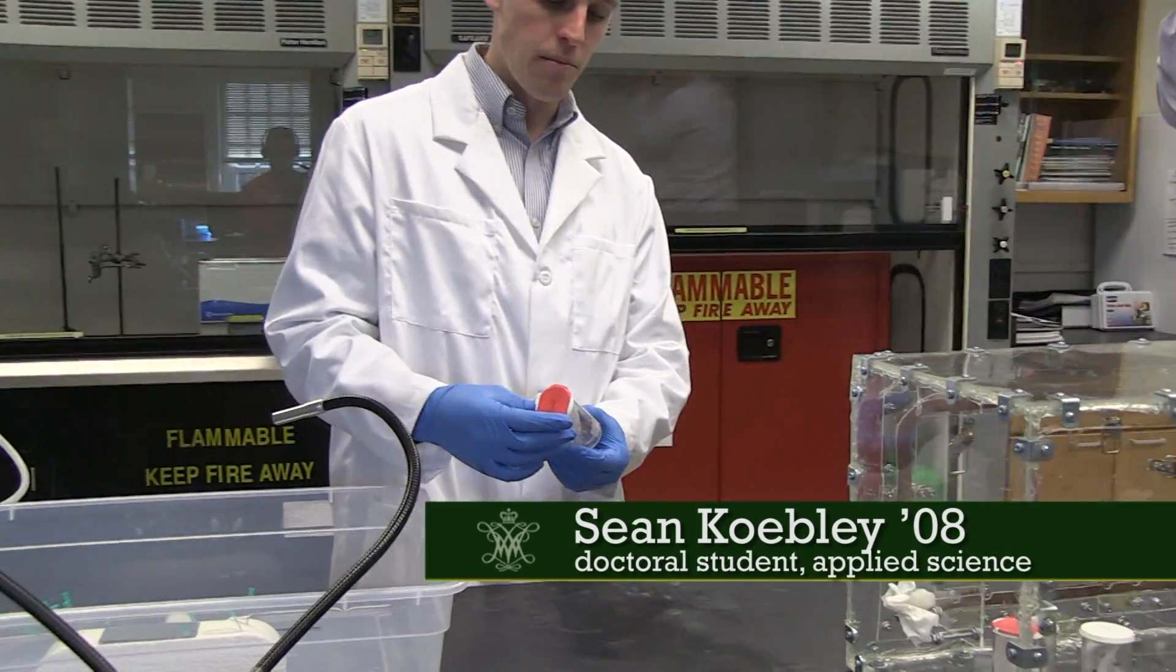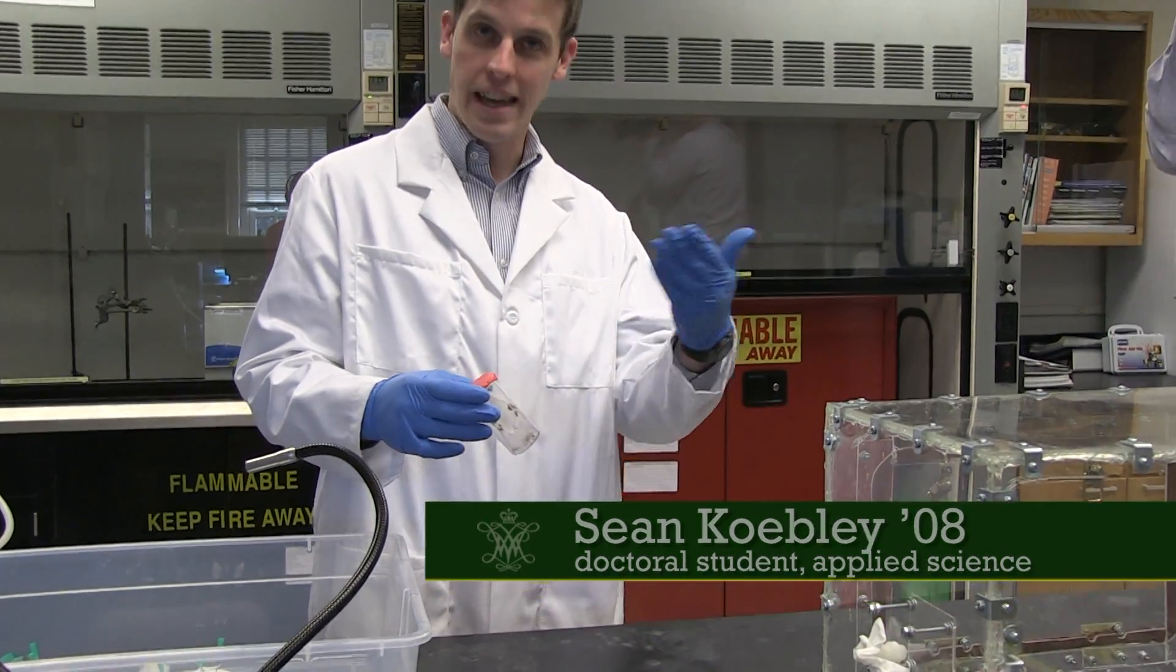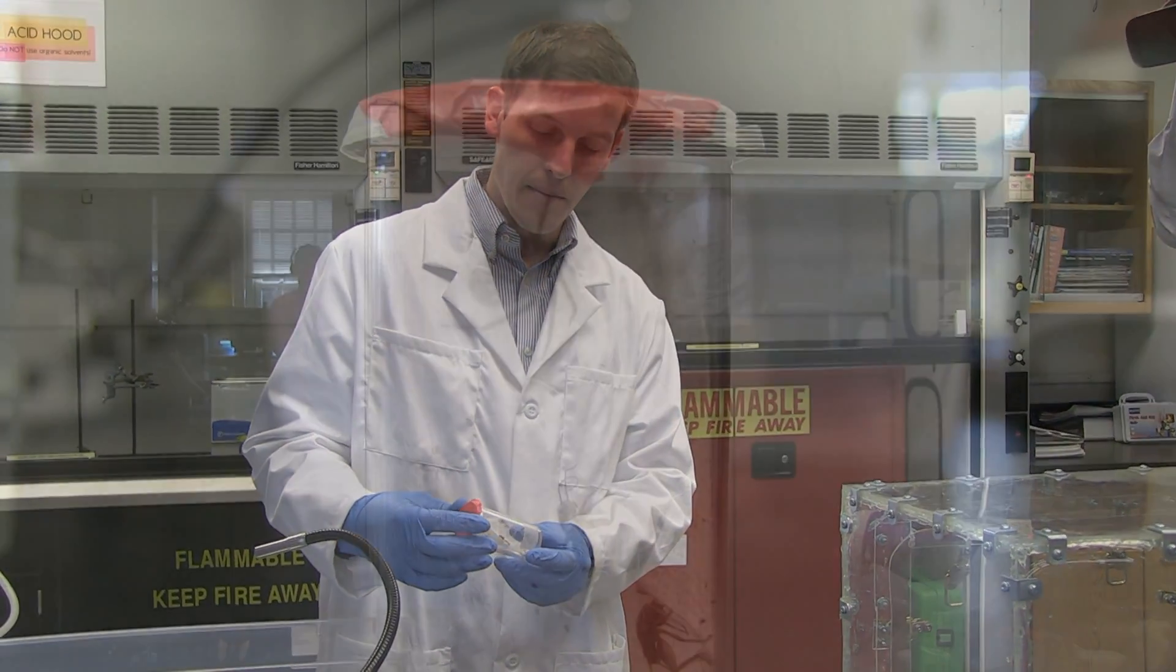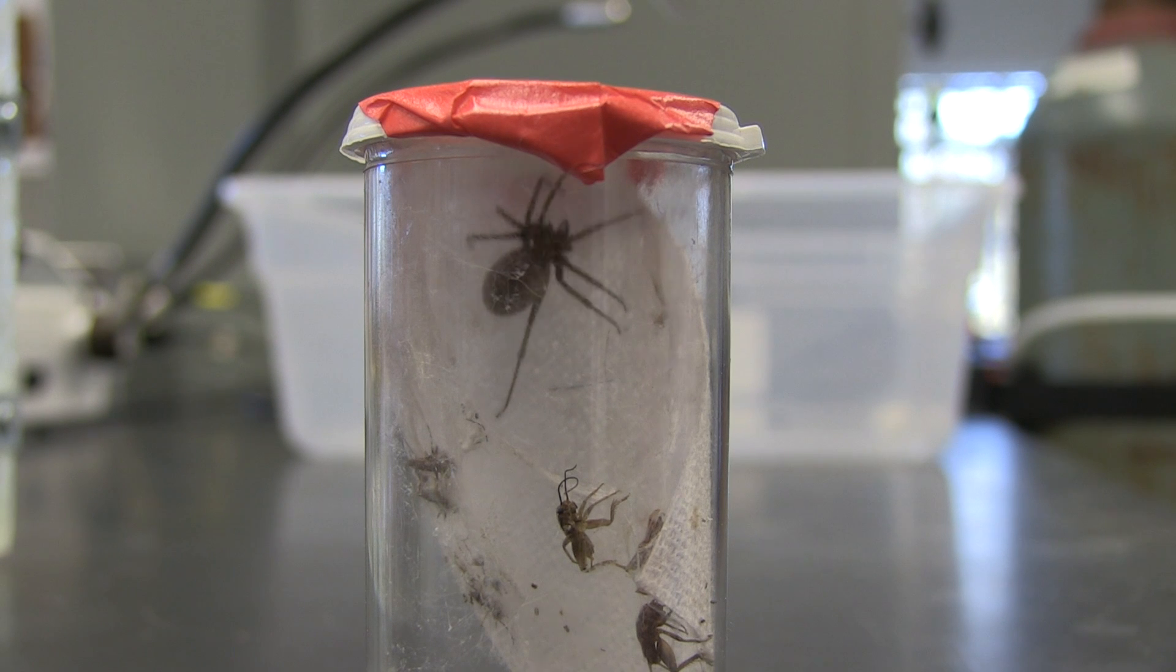These are a South American variety of brown recluse. They're called Loxosceles laeta, their scientific name. You can see they're quite small, maybe the size of a quarter.